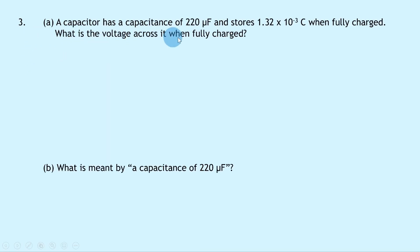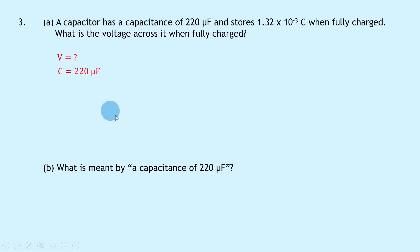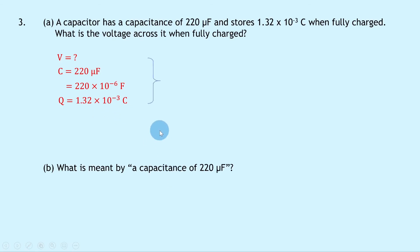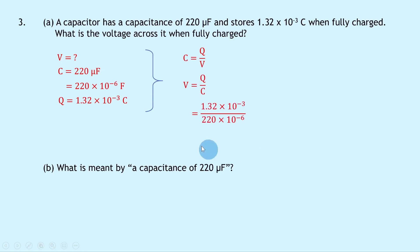Question 3a says that a capacitor has a capacitance of 220 microfarads and stores 1.32 times 10 to the minus 3 coulombs when fully charged. What is the voltage across it when fully charged? Writing down what we know, we're trying to find the voltage V. We know the capacitance C is 220 microfarads, or 220 times 10 to the minus 6 farads, and the charge Q is 1.32 times 10 to the minus 3 coulombs. Writing down our equation C equals Q over V, and rearranging for V by swapping the C and V terms gives V equals Q over C. Substituting in the numbers gives 1.32 times 10 to the minus 3 divided by 220 times 10 to the minus 6, giving a final answer of 6 volts.